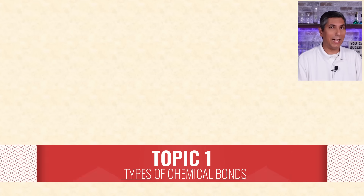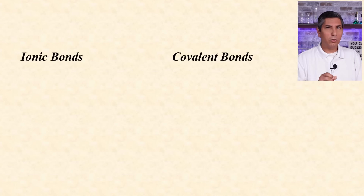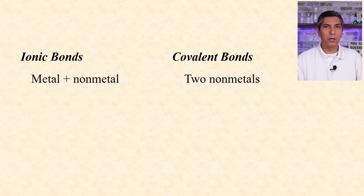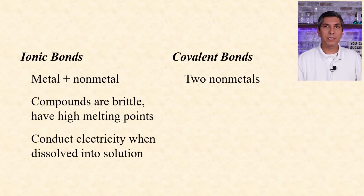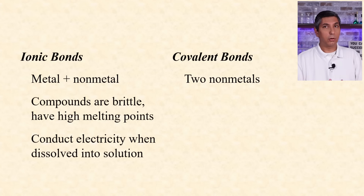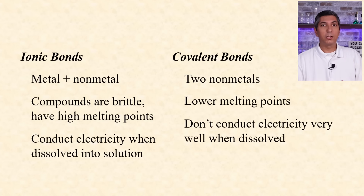Let's get started. In chemical compounds, the two main types of bonds are ionic and covalent. We normally say ionic bonds are between a metal and a non-metal, while covalent bonds are between two non-metals. Ionic compounds are brittle, have high melting points, and conduct electricity when dissolved into solution. Covalent compounds, on the other hand, have lower melting points and don't conduct electricity very well when dissolved.